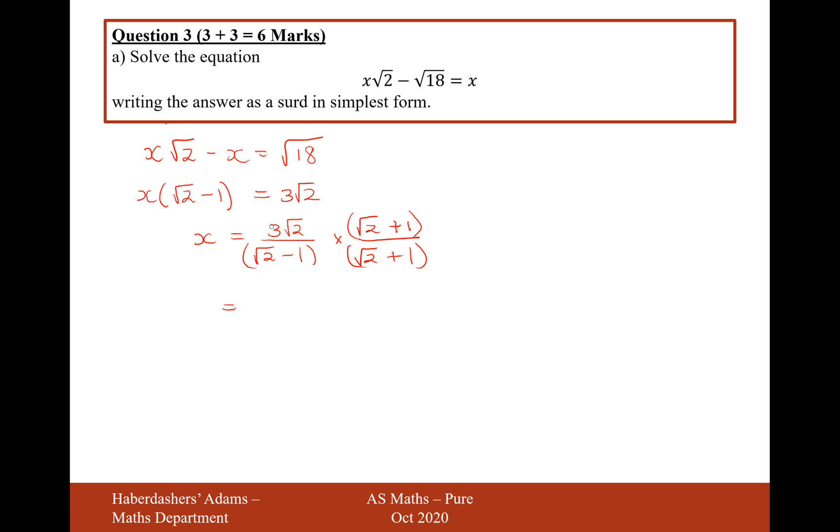So 3√2 times √2 will give us 6, and then plus 3√2 when you multiply the 3√2 by the 1. √2 times √2 is 2, minus √2 and plus √2 will cancel, and then it'll be minus 1, so it's going to be (6 + 3√2)/1, which equals 6 + 3√2 as the final answer for the value x.